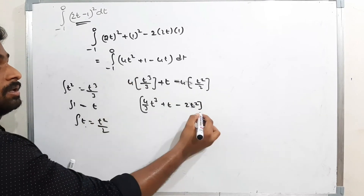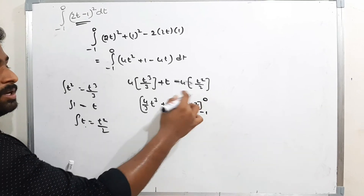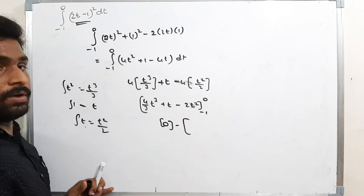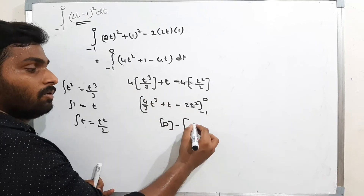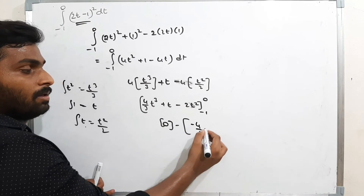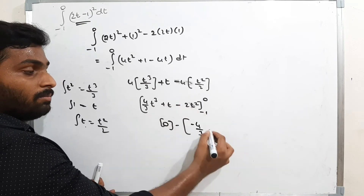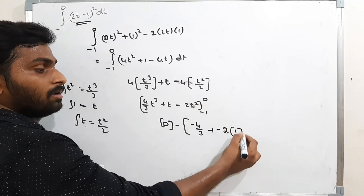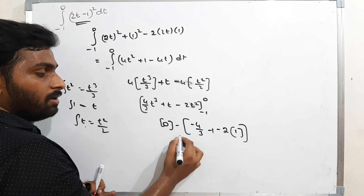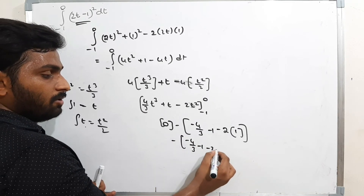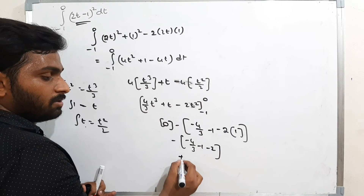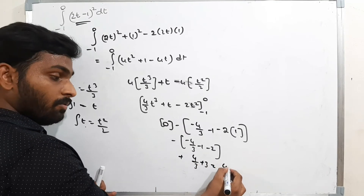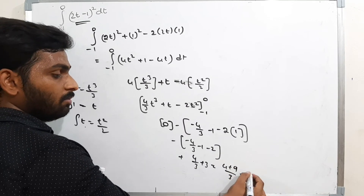Keeping upper limit 0: everything gives 0. Keeping lower limit -1: 4(-1)³/3 + (-1) - 2(-1)² = -4/3 - 1 - 2. Subtracting: 0 minus (-4/3 - 1 - 2) = 4/3 + 1 + 2 = 4/3 + 3 = (4 + 9)/3 = 13/3. Wait — the answer given is 3.